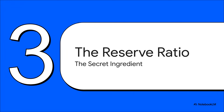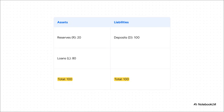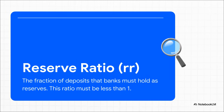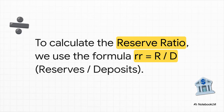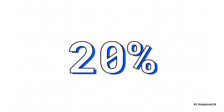The secret lies hidden inside the bank's own accounting. Let's peek inside a simplified version of a bank's books. On the right, you see that 100 in deposits — that's a liability to the bank, money they owe to us. On the left are its assets: it keeps 20 of that 100 as reserves, and it loans out the other 80. It balances perfectly — 100 on each side. This leads us to the key that unlocks everything: the reserve ratio. This is simply the fraction of all deposits that a bank has to keep on hand as reserves — they're not allowed to loan this part out. You calculate it by dividing reserves R by total deposits D. In our example, 20 divided by 100 gives us 0.2, so the reserve ratio is 20%.